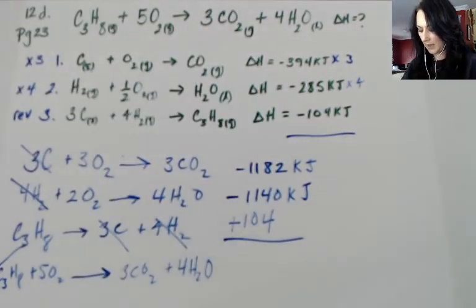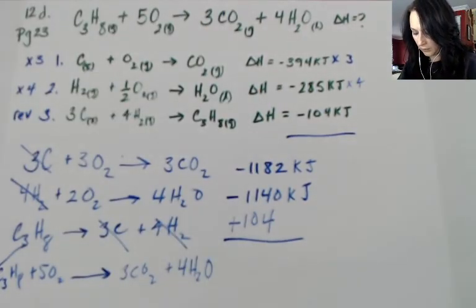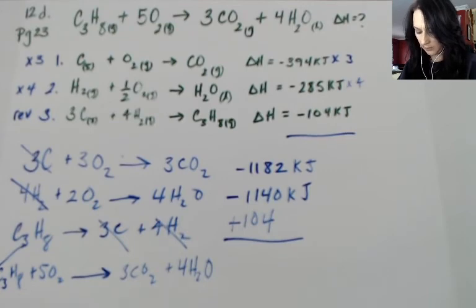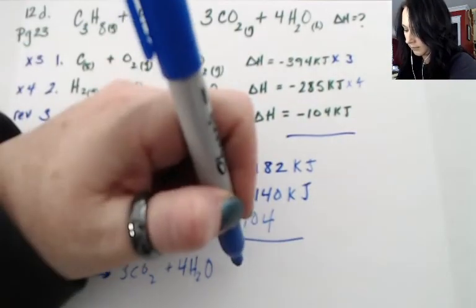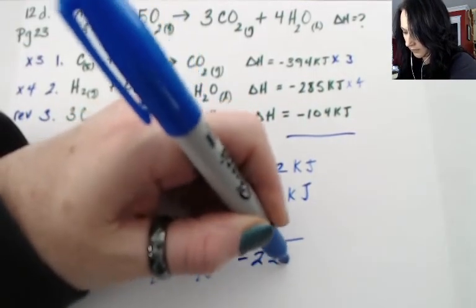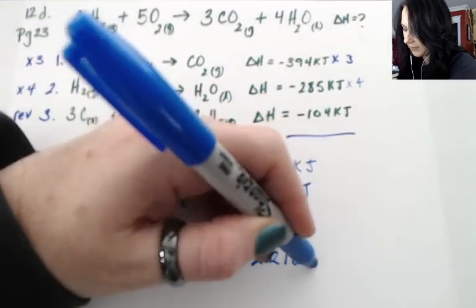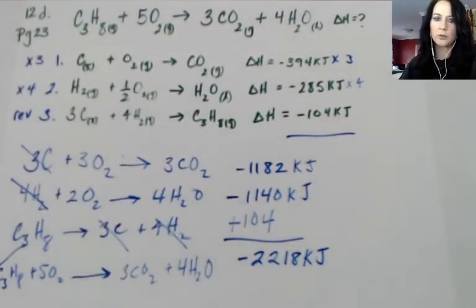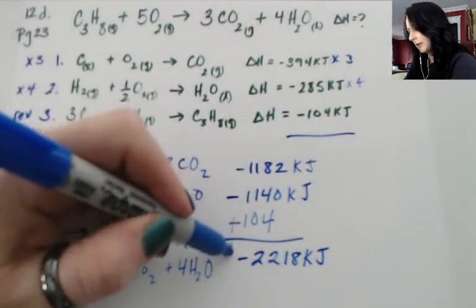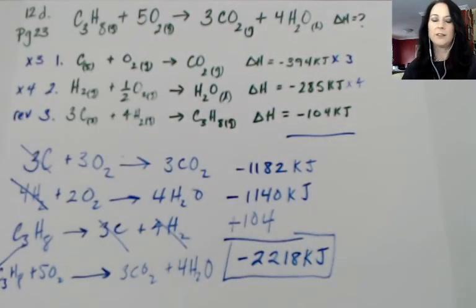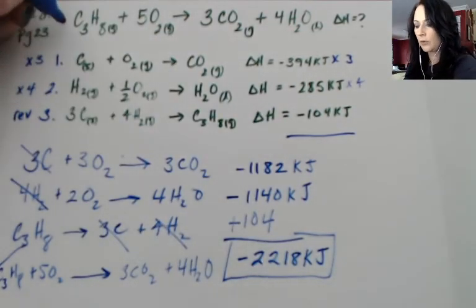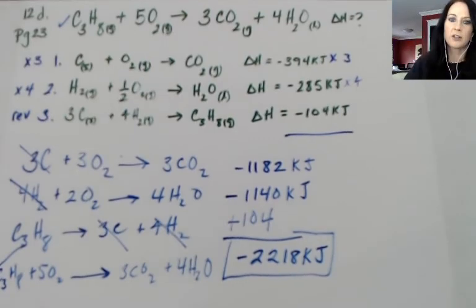I'm going to add the three of these together so negative 1182 plus negative 1140 plus 104, and my delta H is negative 2218 kilojoules per mole and this is going to be your final answer, your delta H for your overall reaction that we're looking for.